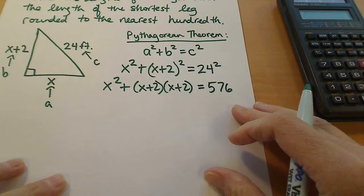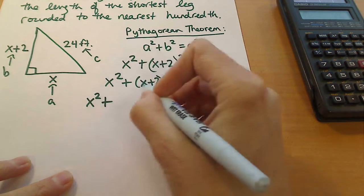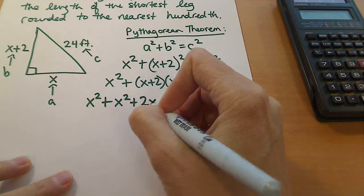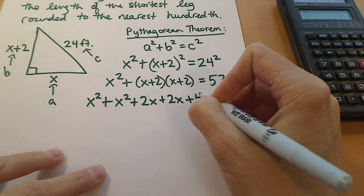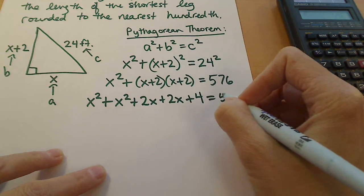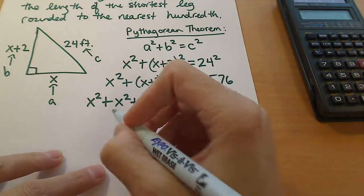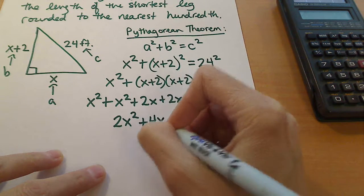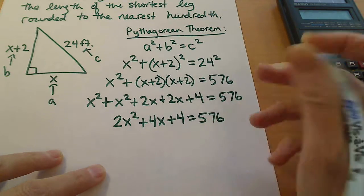Now we want to go ahead and multiply this out, so we're going to have x squared for the first, 2x for the outside, 2x for the inside, and plus 4 for the last, and that equals 576. Collecting like terms, this is 2x squared plus 4x plus 4 equal to 576.